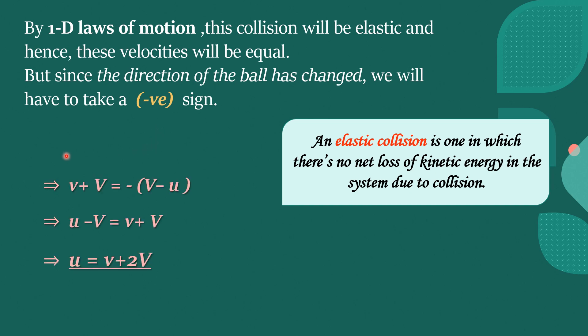This implies that small v plus capital V equals negative of capital V minus u. This implies that u minus capital V equals small v plus capital V. This implies that u equals small v plus 2 times capital V.